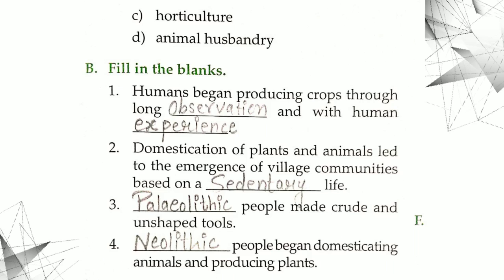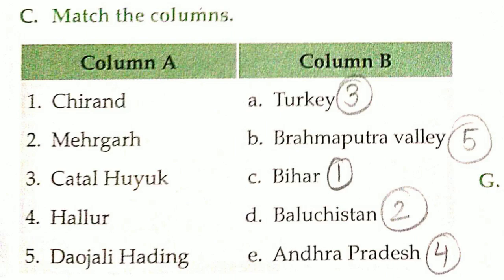Next is dash people began domesticating animals and producing plants. Kaunsi age ke logon ne animals ko domesticate karna start kiya aur plants ko produce karna start kiya? Correct answer is Neolithic, N-E-O-L-I-T-H-I-C, Neolithic. Match the column, match the column.